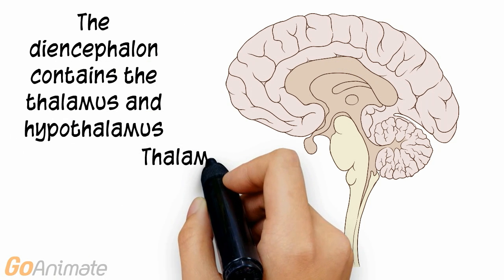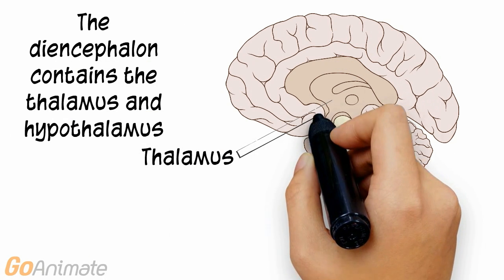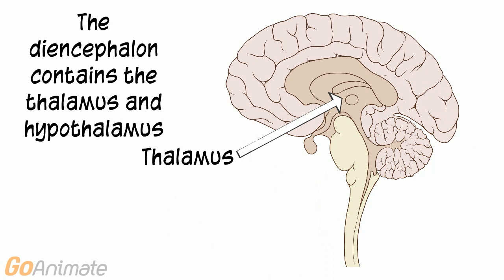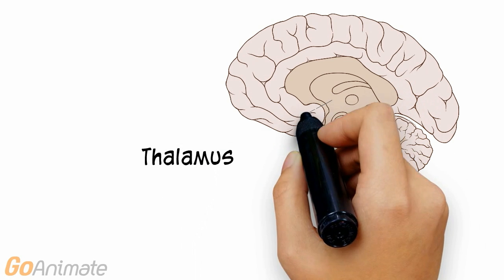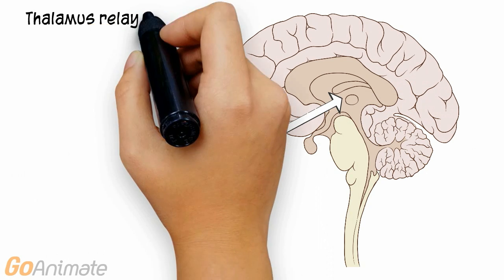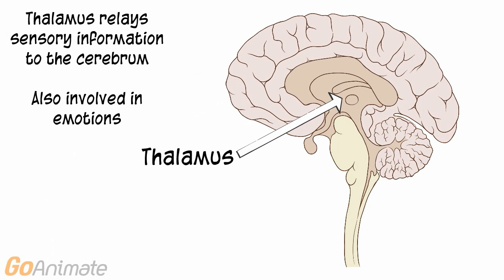The diencephalon is inferior to the corpus callosum and contains the thalamus and hypothalamus. The thalamus relays sensory information to the cerebrum. It is also involved in emotions.